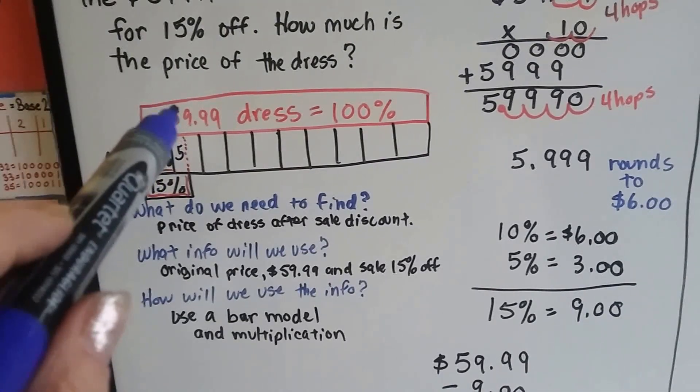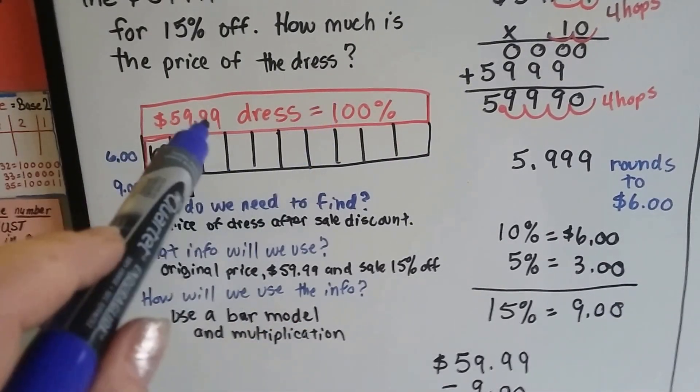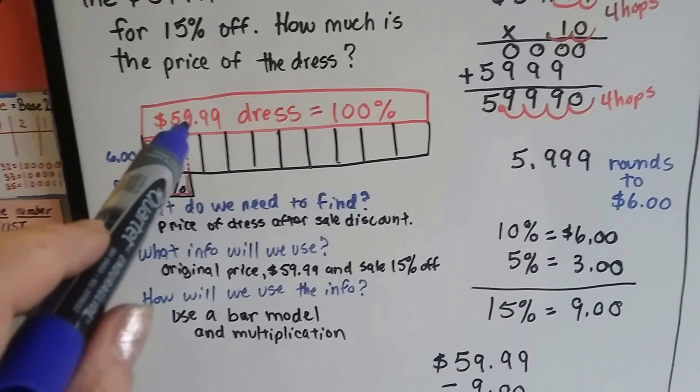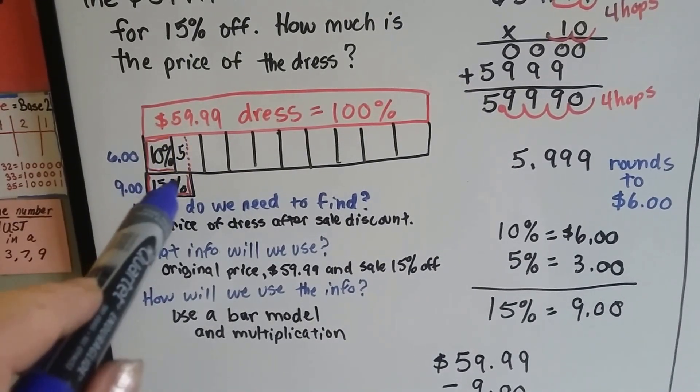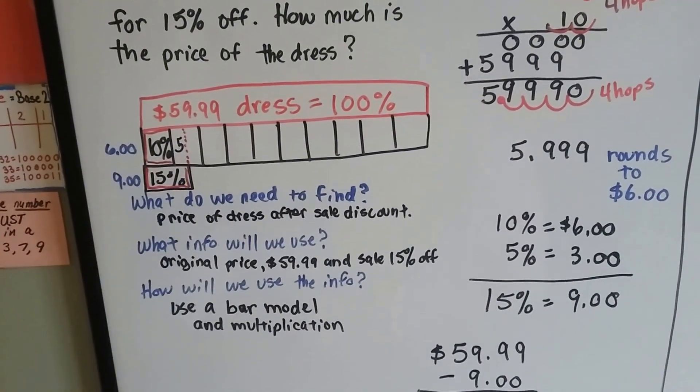So if we could figure this out in our head, that 10% is just moving the decimal point one place over, we could then cut it in half to find the other 5% to make the 15%.